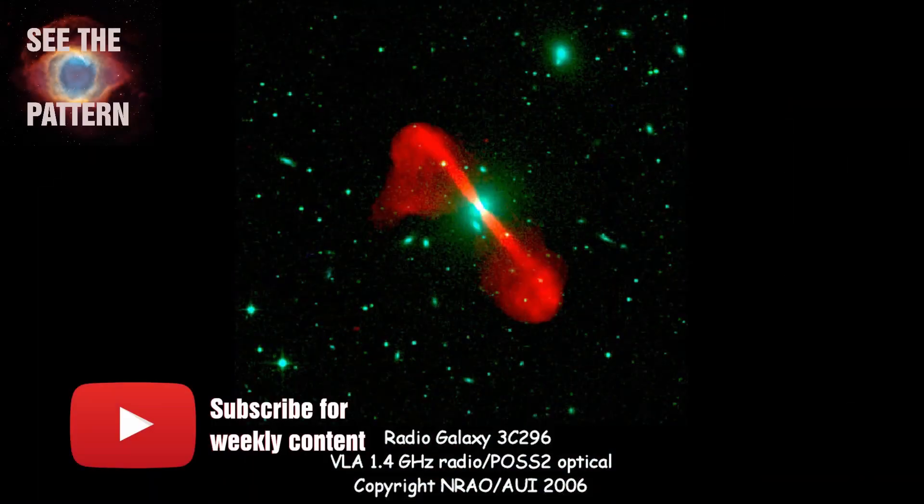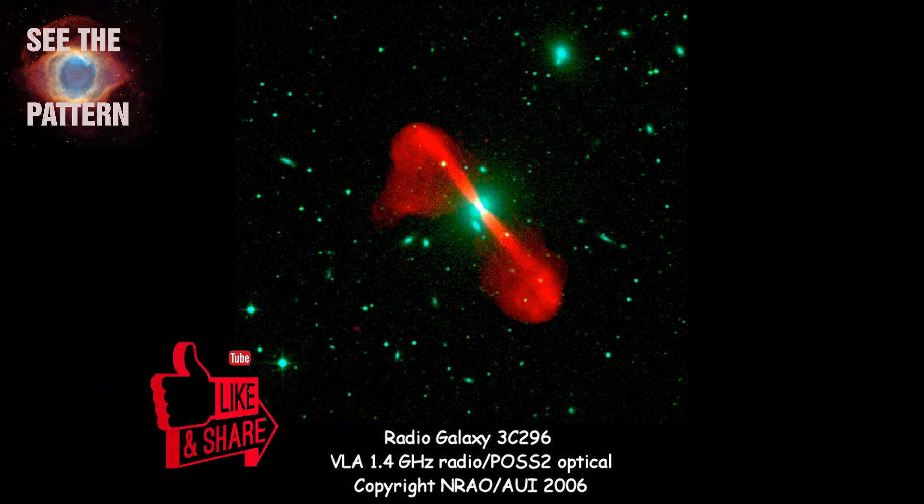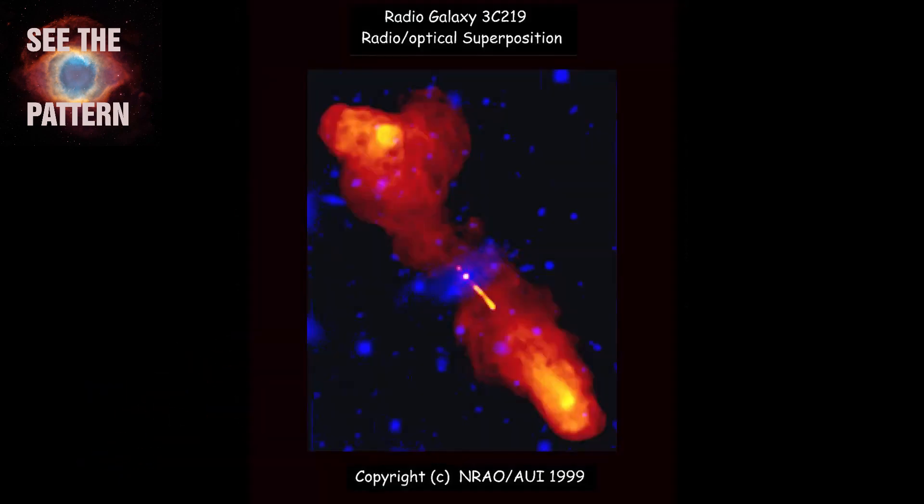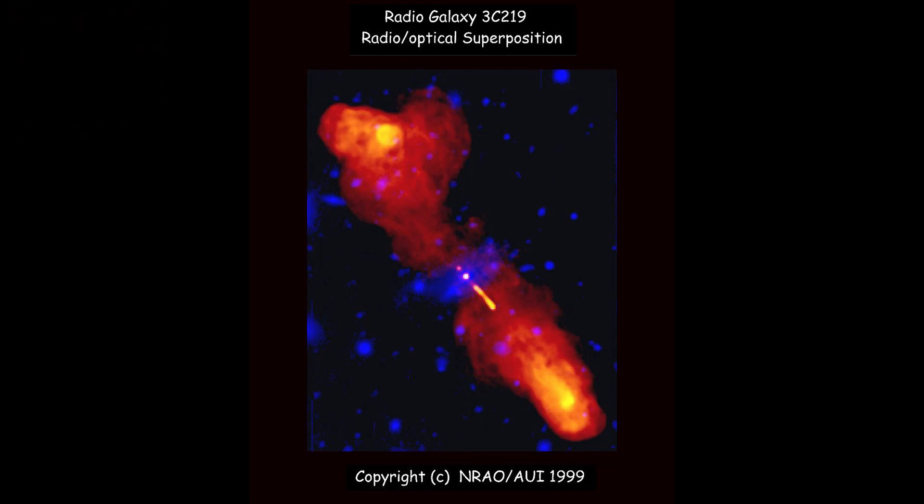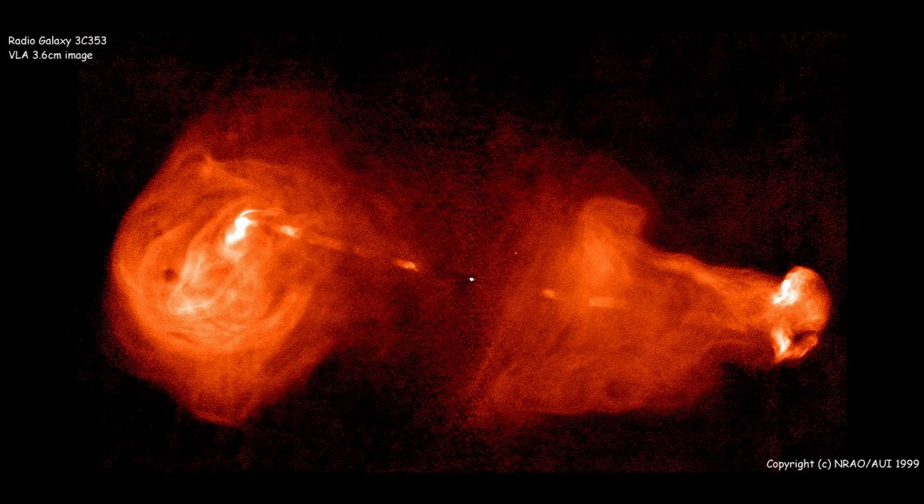This story starts with the discovery of a strange double radio source. These were one of the most puzzling problems in astrophysics at the time, the 1970s. These sources were emitting huge amounts of energy and often had a galaxy situated right between the two sources.